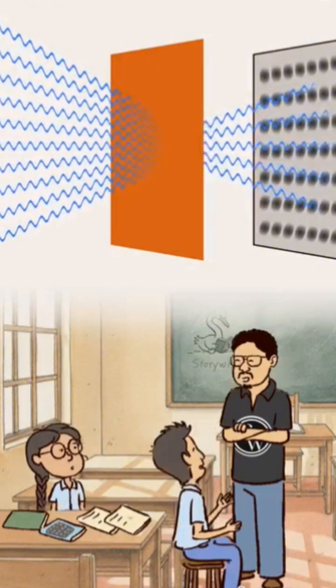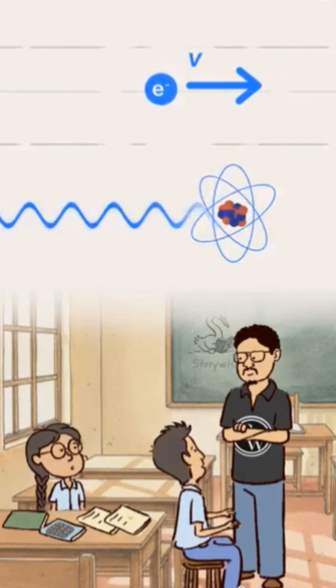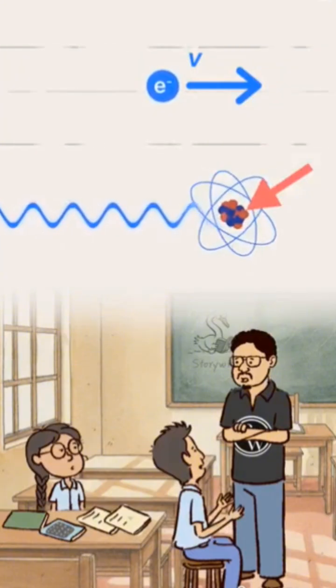Just like x-rays. Wow! That's incredible. So if we increase the electron's speed further, in other words, shorten the wavelength even more, could we photograph an atom's nucleus?